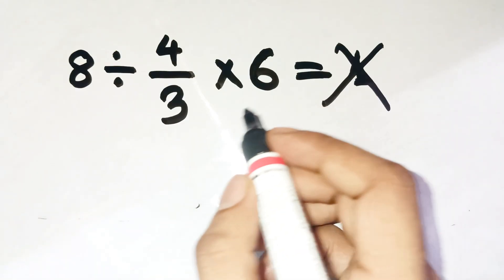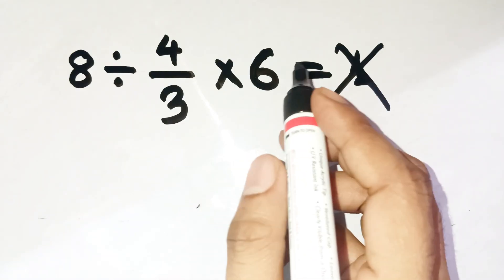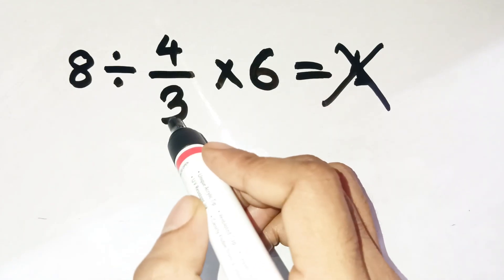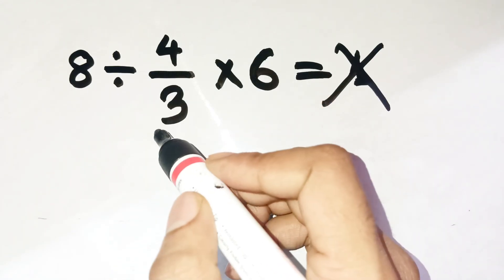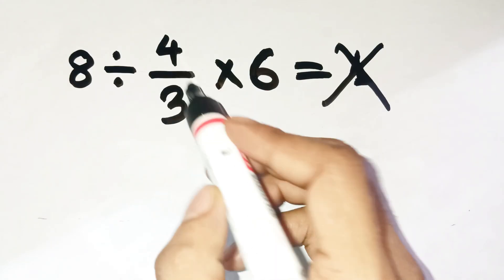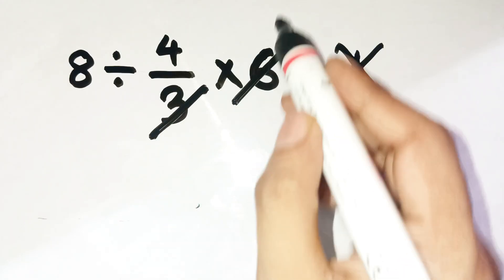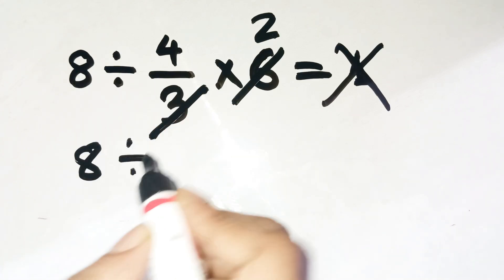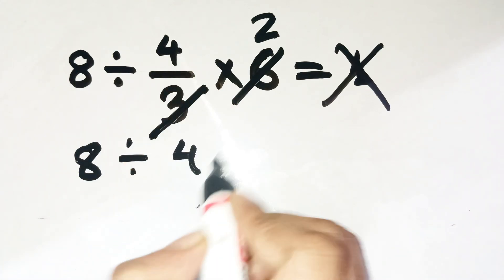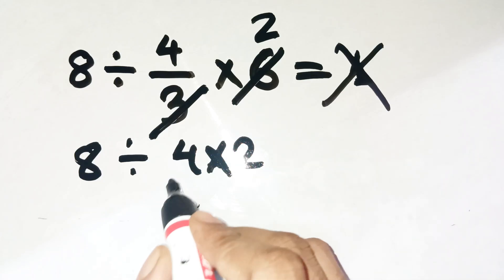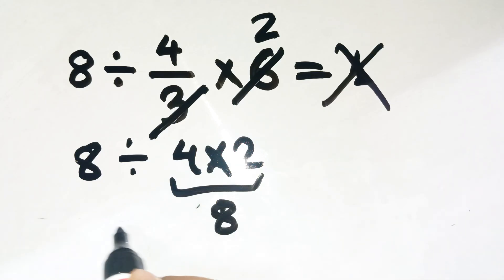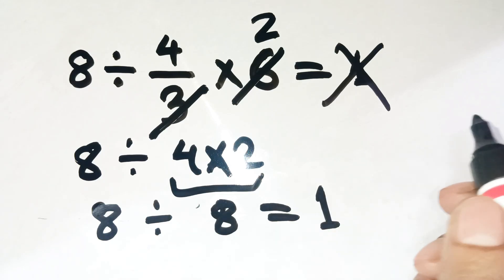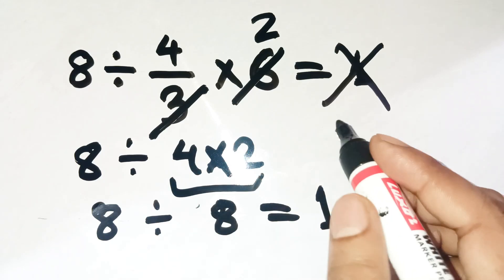I totally get why so many people say the answer is 1. The moment they see that little fraction, 4 over 3, their brain does this funny shortcut where they think: 3 divides 6, that happens 2 times. So the expression becomes 8 divided by 4 times 2. Then they go, 4 times 2 gives 8, and 8 divided by 8 is 1. Super clean, super quick — but also super wrong.